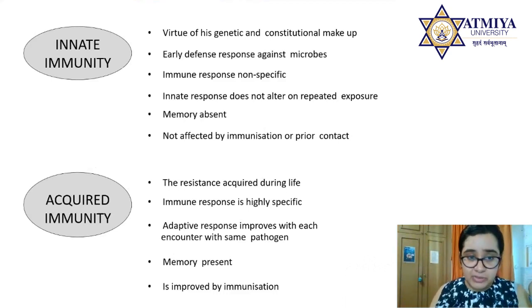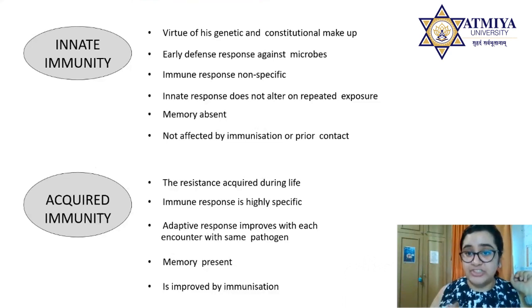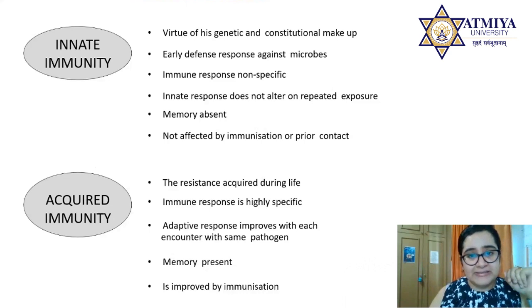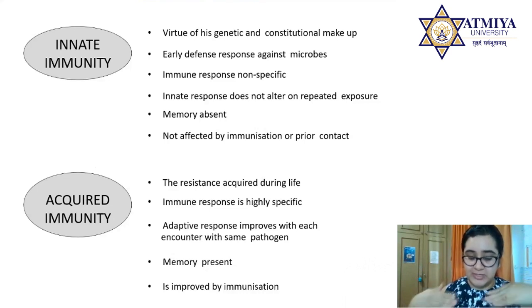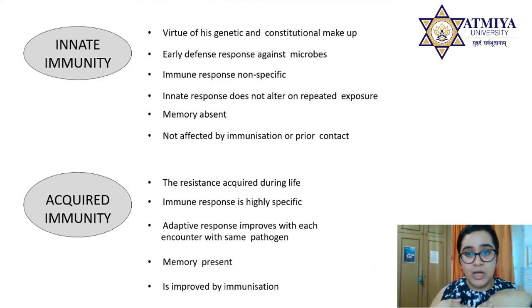There are two main kinds of immunity: innate immunity and acquired immunity. Innate immunity is something innate to the host by virtue of genetic and constitutional makeup. Acquired immunity is something acquired or adapted during life. Innate immunity can be considered the borderline defense — the first row of soldiers guarding our borders between our body and the pathogen. It provides an early, non-specific defense response against microbes, while acquired immunity is very specific — the expert army invited once the innate system has assessed the situation.